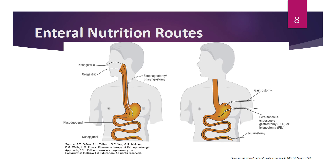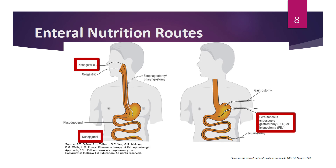One important thing to realize with enteral nutrition is the variety of different routes available. Some of the most common forms are the nasogastric tube, nasojejunal tube, and percutaneous endoscopic gastrostomy or jejunostomy — known as PEG or PEJ tubes. Oral gastric tube is also relatively common. A nasogastric tube is inserted through the nostril, threaded down the esophagus, and terminates in the stomach. The first part of the term indicates where it's inserted, and the second part where it terminates.